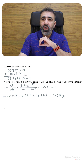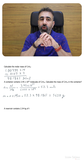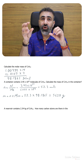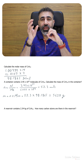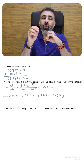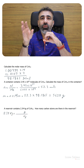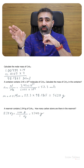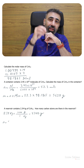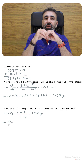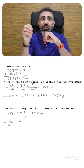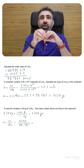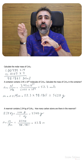A reservoir contains 2.34 kilograms of C7H14. How many carbon atoms are there? First, convert to grams: 2.34 kilograms times 1000 equals 2340 grams. Then we find the number of moles by dividing that mass, 2340, by the molar mass, 98.1861, giving us 23.8 moles.